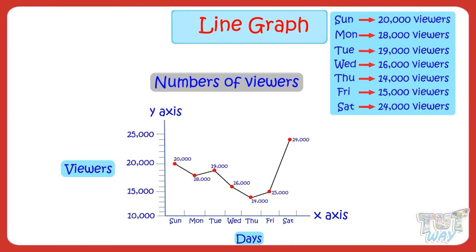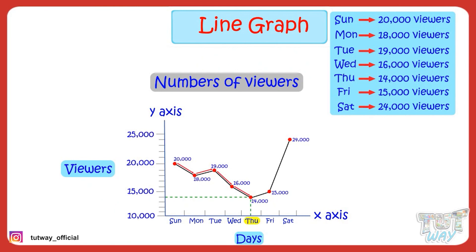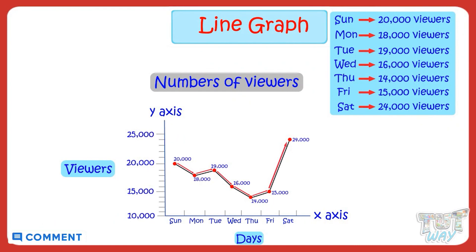Let's read the line graph. Our line graph says 20,000 people watched the movie on Sunday, which decreased by 2,000 on Monday, so it's 18,000 people on Monday. Then on Tuesday, number of viewers increased to 19,000. On Wednesday, number of viewers decreased to 16,000. On Thursday, number of viewers decreased to 14,000. On Friday, number of viewers increased to 15,000. On Saturday, number of viewers increased to 24,000. So there is a big rise in the number of viewers on Saturday. A line graph clearly shows the peaks and dips — where peaks show increase in numeric values on y-axis, and dips show decrease in numeric values on y-axis.